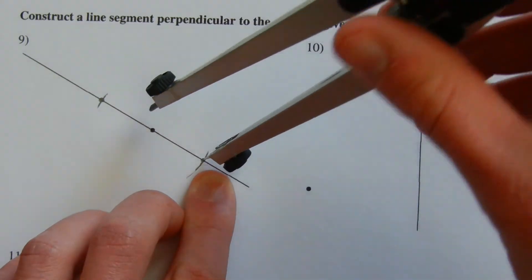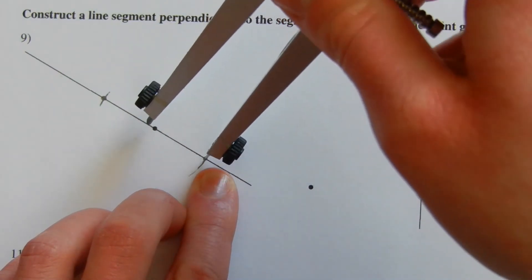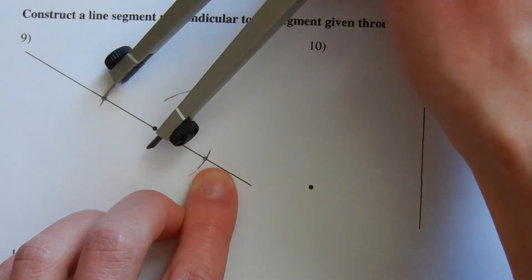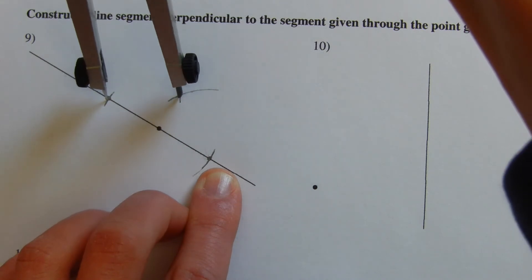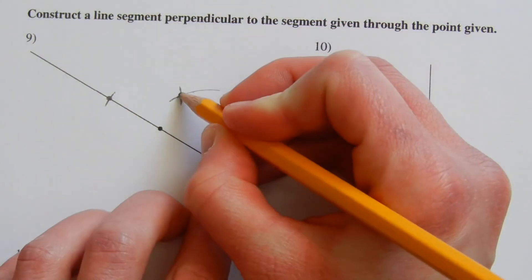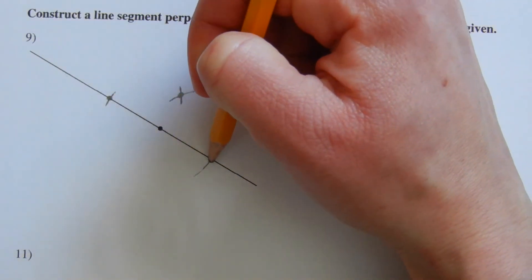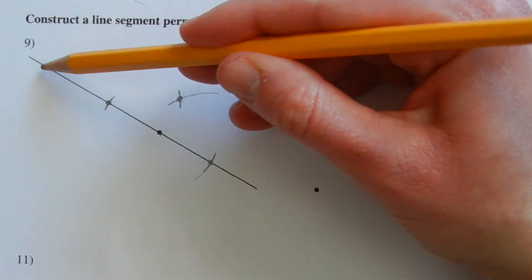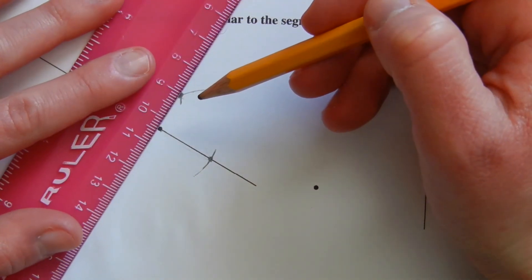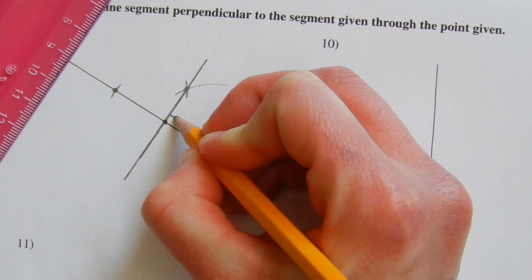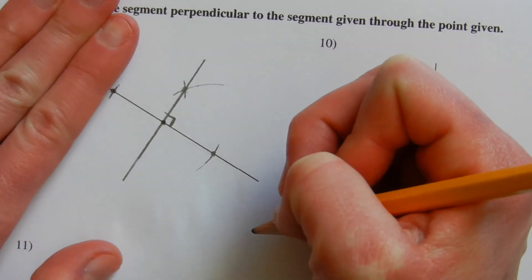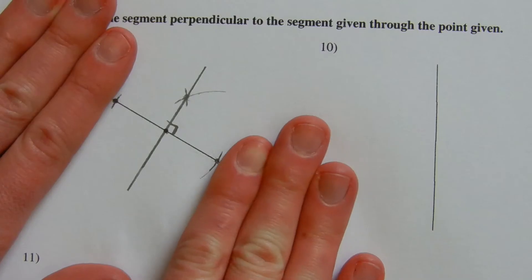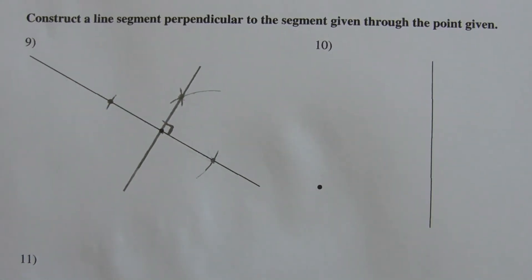To create the perpendicular bisector, we place our compass on one of the new endpoints, extend a little more than halfway, make our mark, then extend from the other new endpoint keeping the same compass measurement and make another mark. The intersection is an endpoint along the perpendicular bisector. Connecting that intersection to the given point gives us a line segment perpendicular to the given line. It bisects our small created segment but is perpendicular to the entire original line.